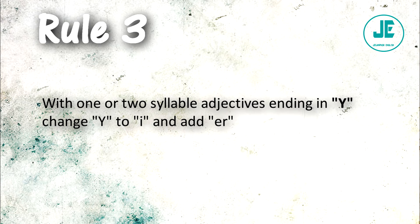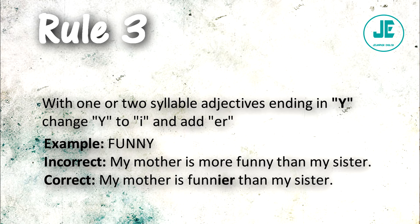Rule number three: with one or two-syllable adjectives ending in 'y,' change the 'y' to 'i' and add '-er.' Example: 'funny.' Incorrect: 'My mother is more funny than my sister.' Correct: 'My mother is funnier than my sister.' So in 'funny,' we change the 'y' to 'i' and add '-er' — 'funny' becomes 'funnier.'